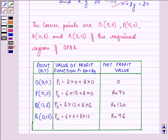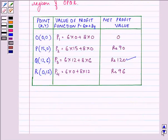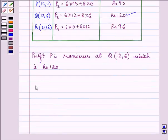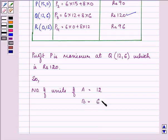We can see that profit P is maximum at point Q, where the coordinates are 12 and 6, giving a profit of Rs 120.